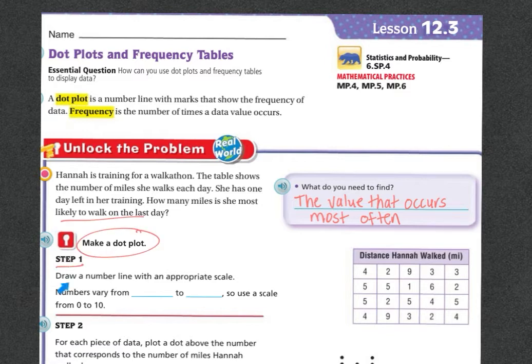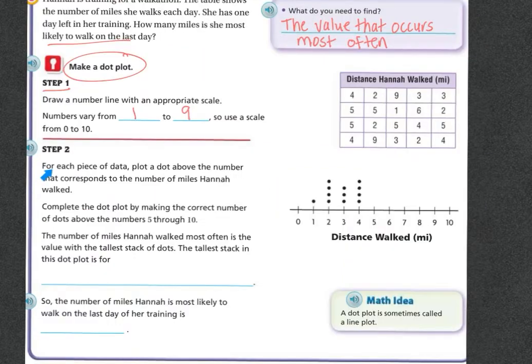So let's make a dot plot. Step 1: Draw a number line with the appropriate scale. The numbers are going to vary from 1 to 9, because 9 is the highest number that she walked and 1 is the lowest number that she walked.